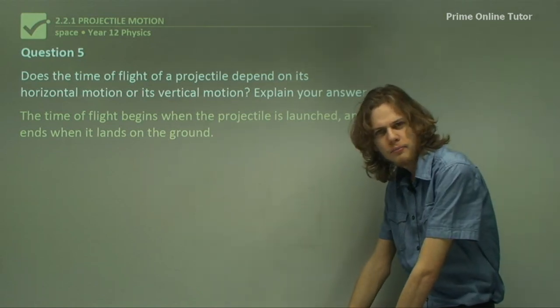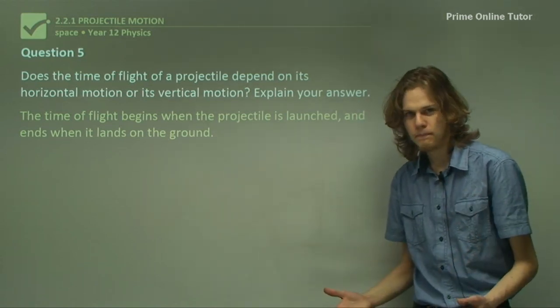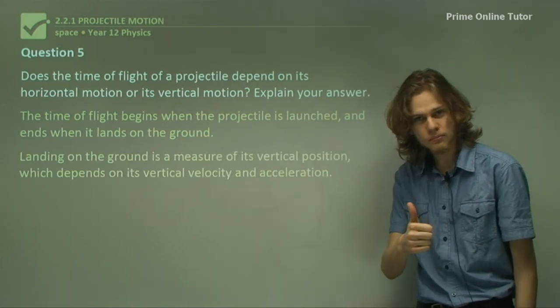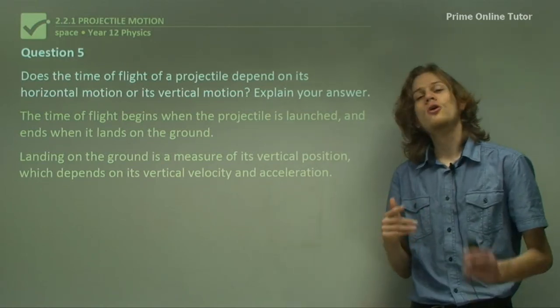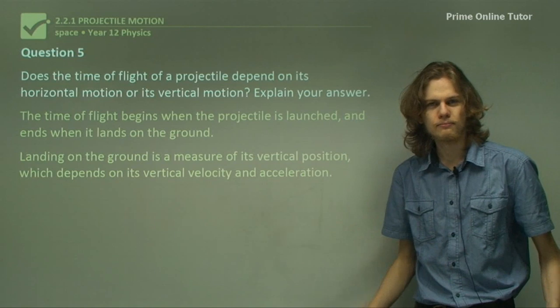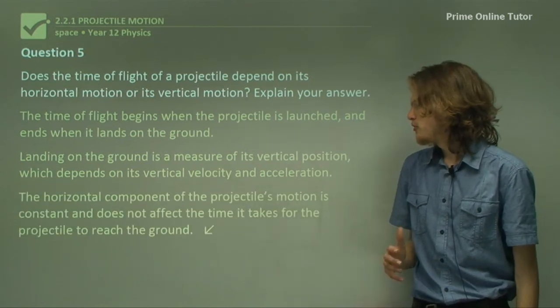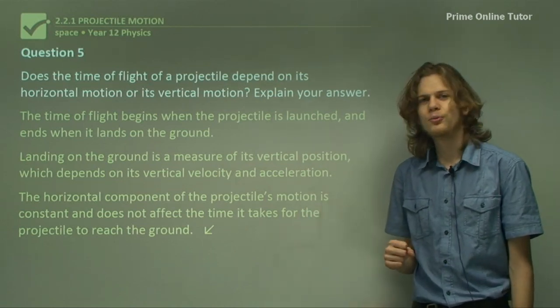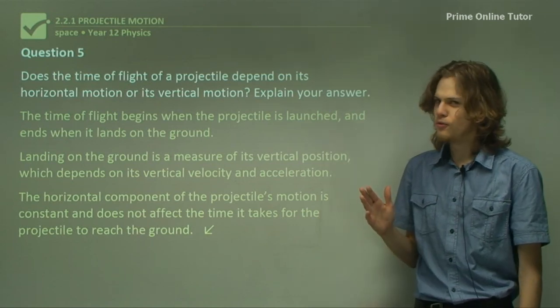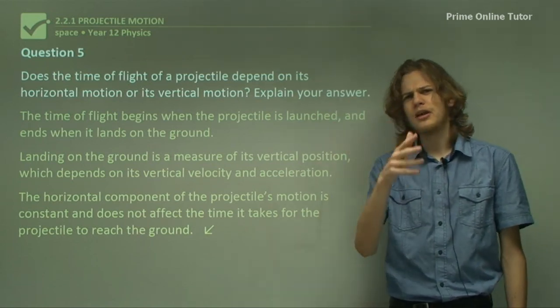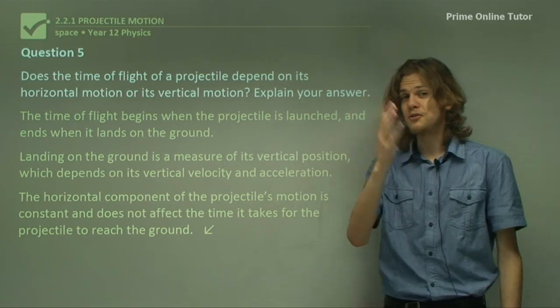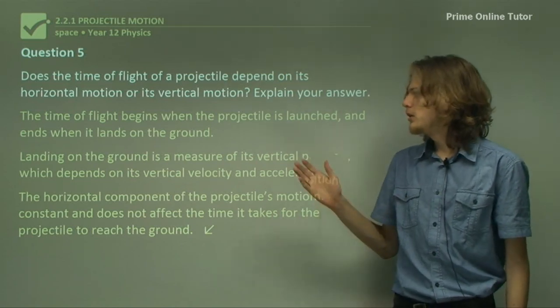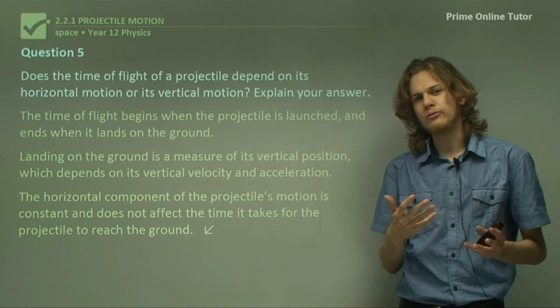The time of flight begins when the projectile is launched and ends when it lands on the ground. Where it is from the ground is a measure of vertical position. Landing on the ground is a measure of its vertical position, which depends on its vertical velocity and its vertical acceleration, but not its horizontal velocity or horizontal acceleration. The horizontal component of the projectile's motion is constant and does not affect the time it takes for the projectile to reach the ground. As I mentioned before, the exception to this is if you're throwing something and you're fairly close to a cliff, or if you have sufficient horizontal motion, it'll fall off the cliff. But as long as you don't throw it too far, it'll only be a measure of the vertical motion.